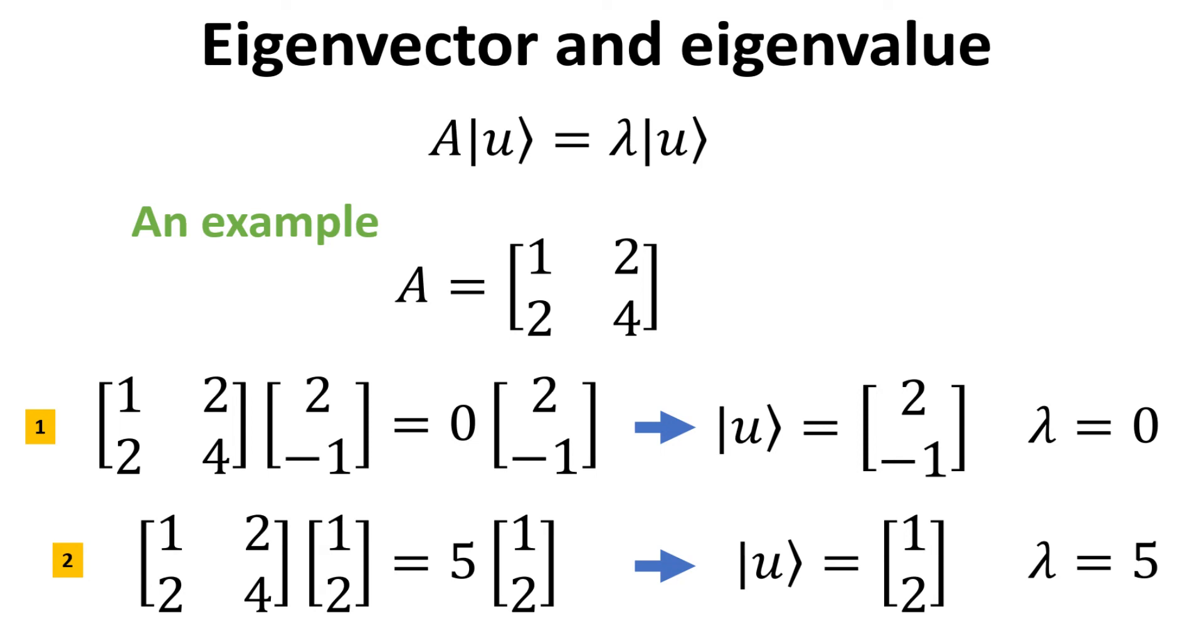An eigenvector that yields an eigenvalue of 0 is the vector [2, -1] as shown in equation 1. The second eigenvector that yields an eigenvalue of 5 is the vector [1, 2] as shown in equation 2.